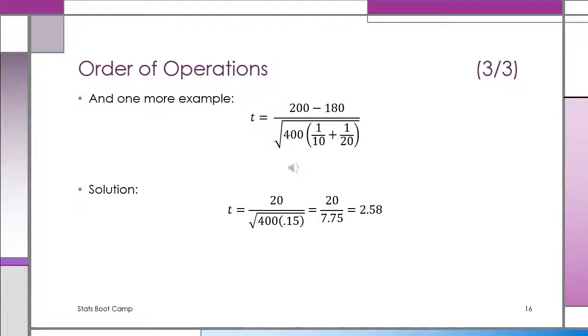Here's another example just to give you more practice. T is equal to 200 minus 180, so the numerator is 20. Now the denominator has a square root. It has 400 multiplied by then something inside of parentheses. And inside of parentheses, two fractions that we have to add up. That gets done first. You get 0.15, multiply by 400, put that under a square root. Then you can finally take 20 divided by 7.75, and your solution is that T computes to 2.58.